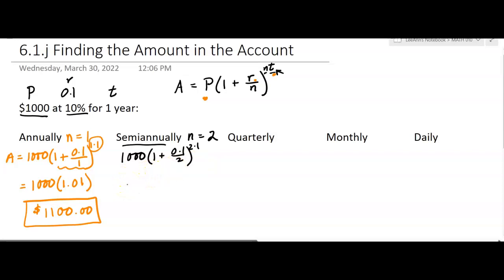So I get 1,000 times 1.05 squared. You could do that on a calculator. So now I go to my calculator, I put in 1,000 times 1.05 squared, and I should make more money than I did annually because I'm doing it semi-annually. It looks like I'm getting $1,102.50, so I'm making $2.50 more than if it had been compounded annually.